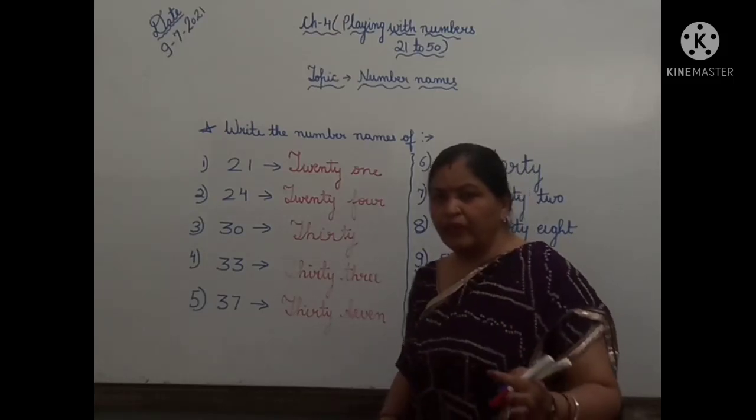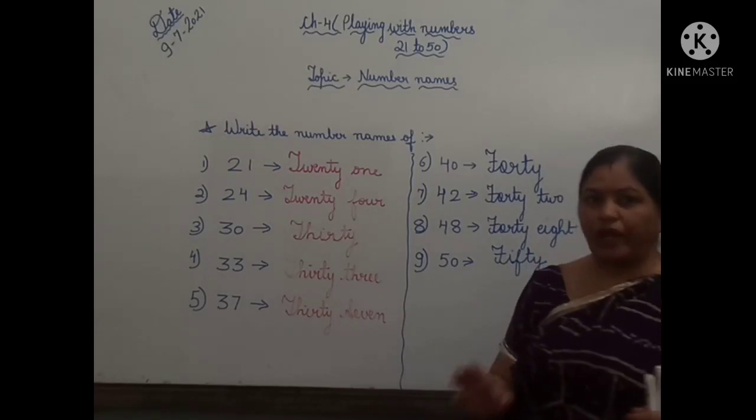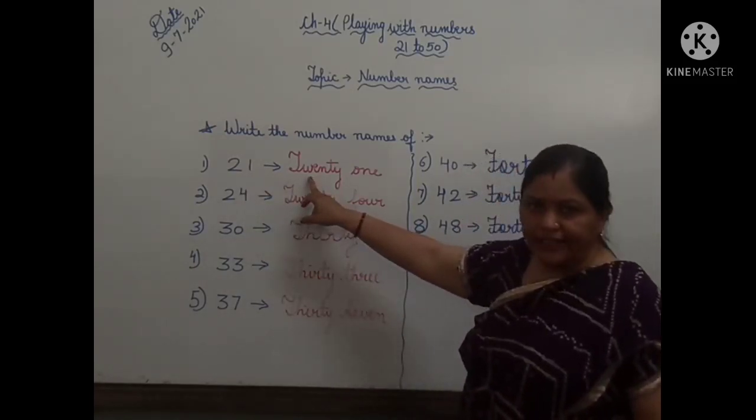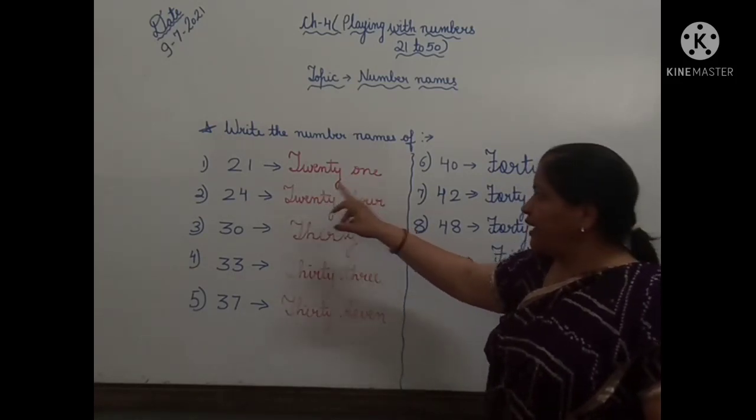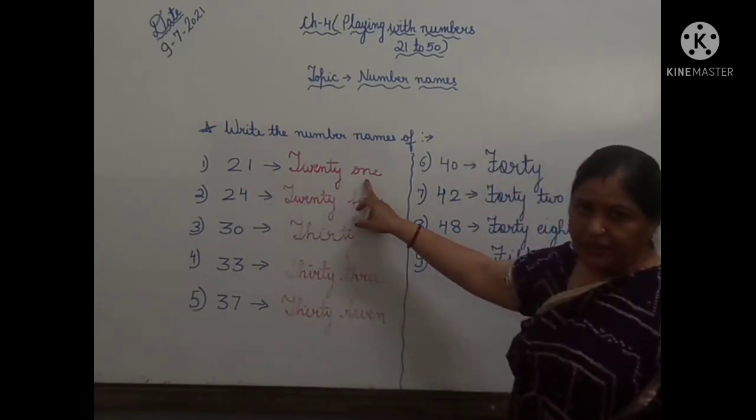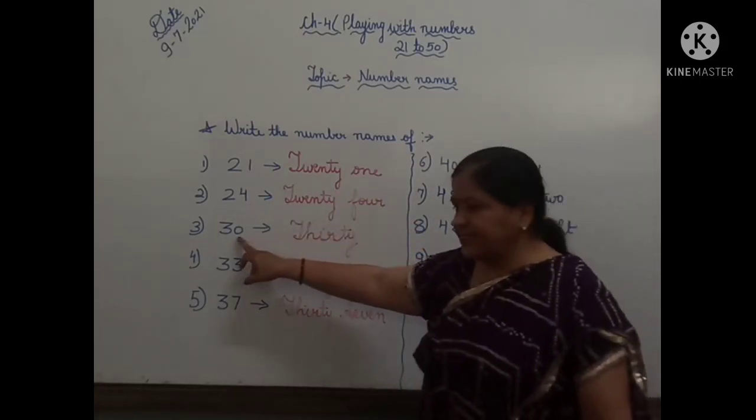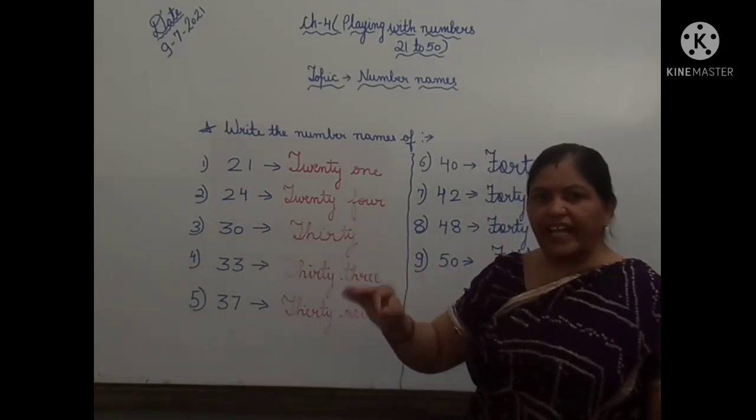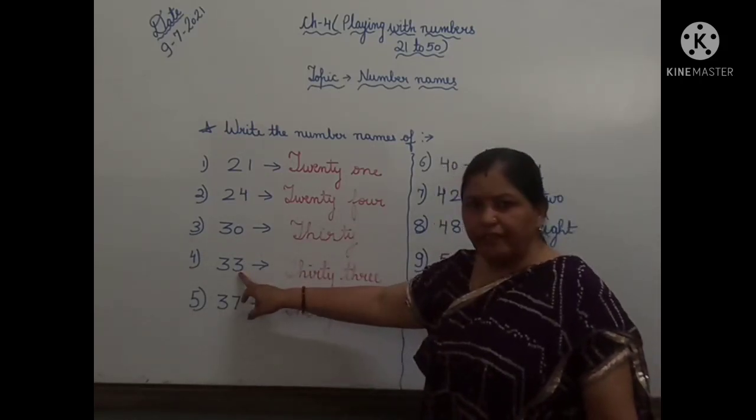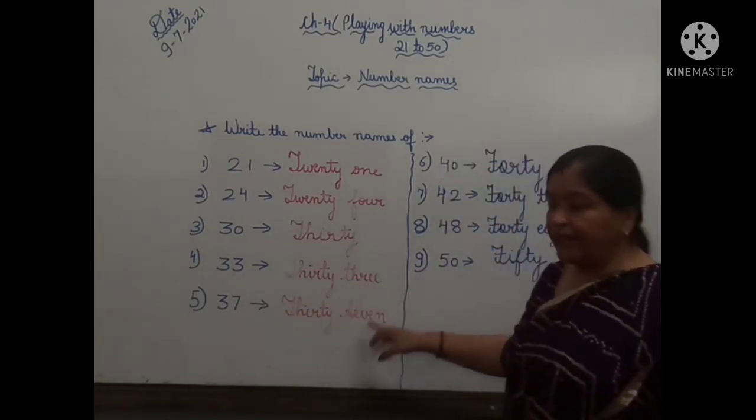As I am clarifying, we have done the number name 20. Now we are teaching 21 to 50. For 21, you have to write the spelling of 20. Then the number which is given to you next - here 1 is there, write down the spelling of 1. Here 4 is given, so write down the spelling of 4. Now this is the spelling of 30: T-H-I-R-T-Y. Again, the next number is 3. This is 33. Next number is 7, that is 37.